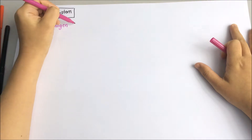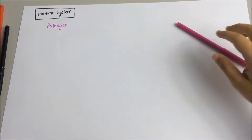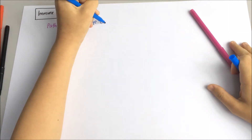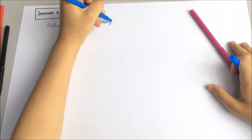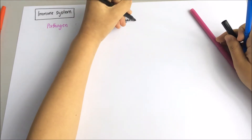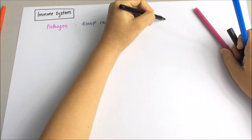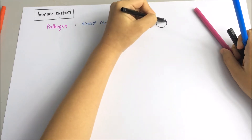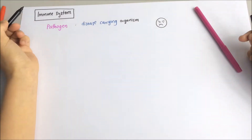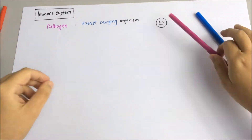The first thing that you have to know is pathogen. Pathogen is a disease-causing microorganism — it is what makes you fall sick. So pathogen is the bad organism.